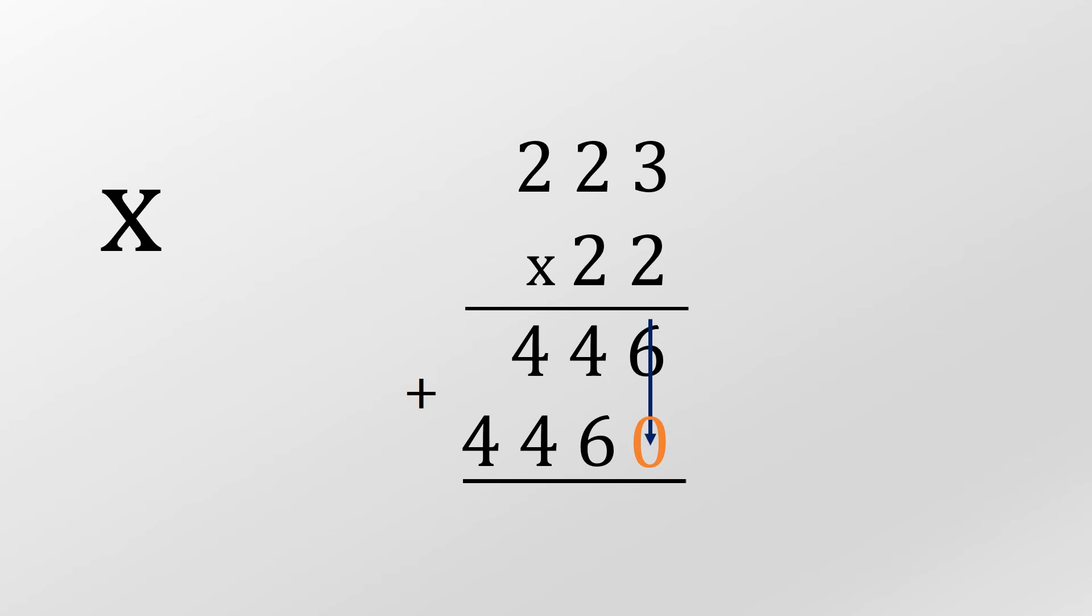And now we add these two lines together. Six plus zero is six. Six plus four is ten, so zero down, carry the one. Four plus four is eight, add that one and that makes nine. Then four plus nothing, we just put the four down. Four thousand nine hundred and six.